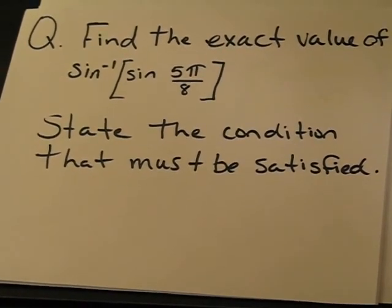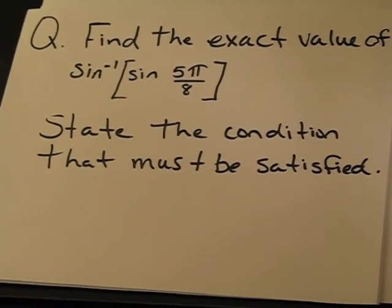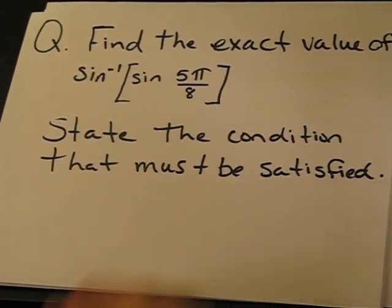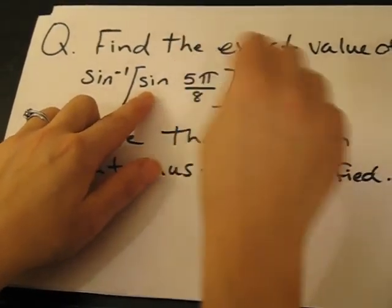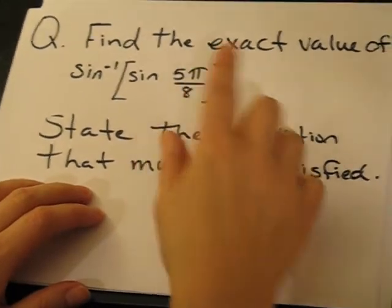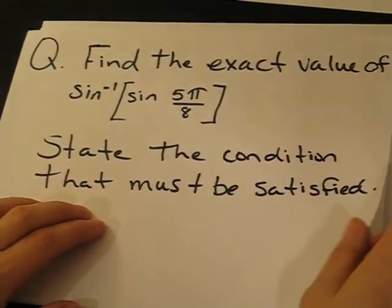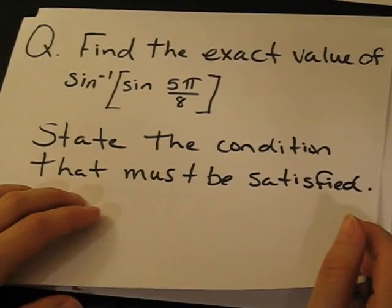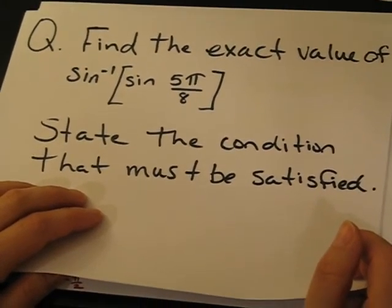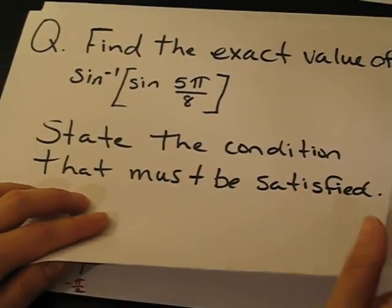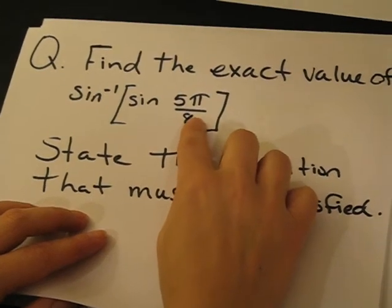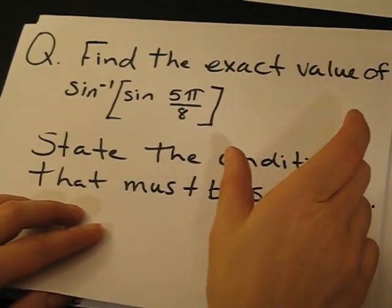The condition that must be satisfied is that theta must be within the domain of sine. This is our theta, or technically our angle, and that must be within the domain of sine. The domain of sine is negative pi over 2 and pi over 2. It's that interval, so we have to determine if five-eighths pi is within that interval.